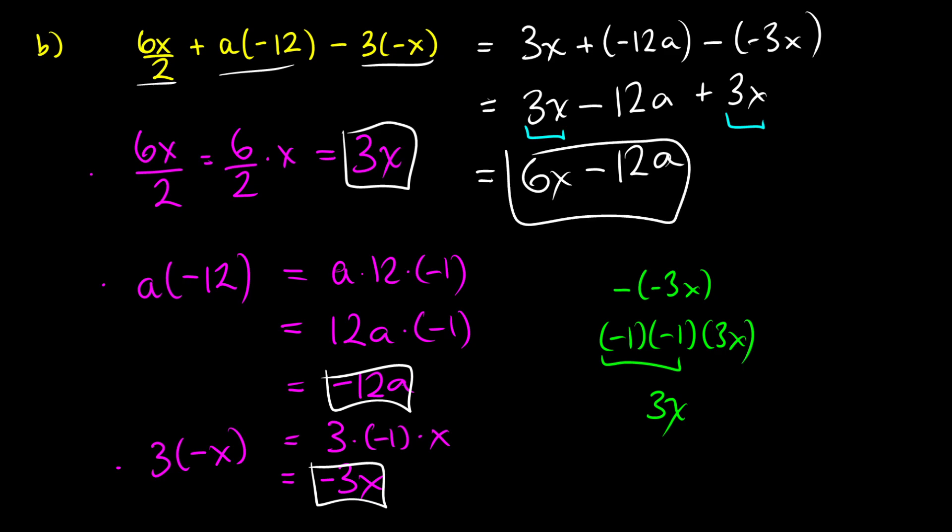6x over 2 plus a times negative 12 minus three times negative x is just the same thing as 6x minus 12a. And you've done this using the properties of real numbers and the properties of negative numbers.